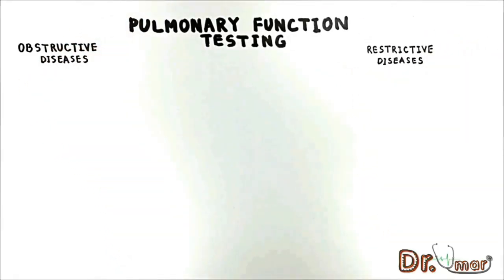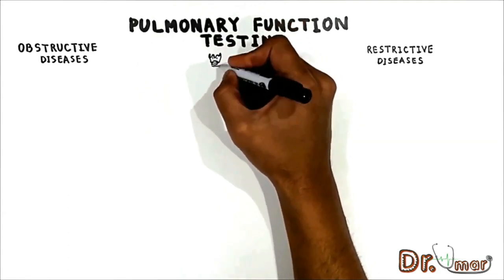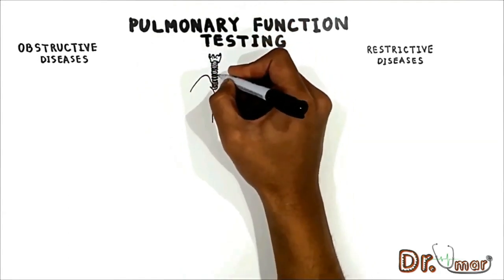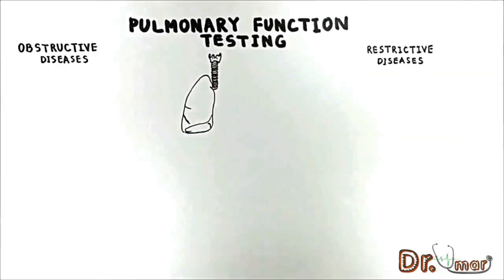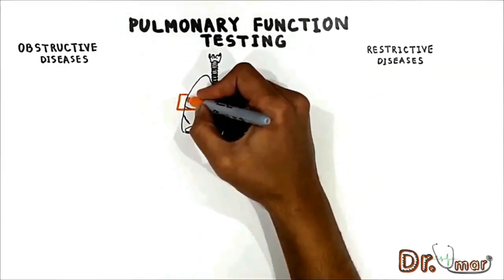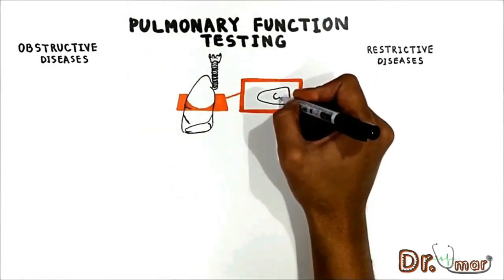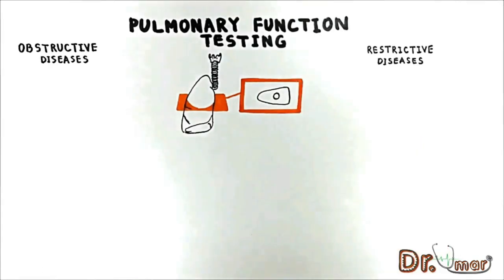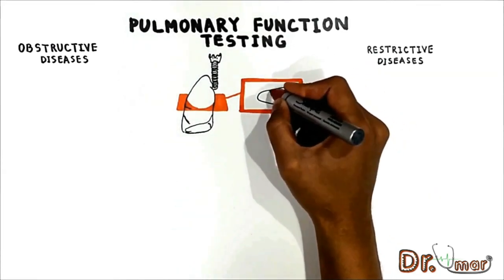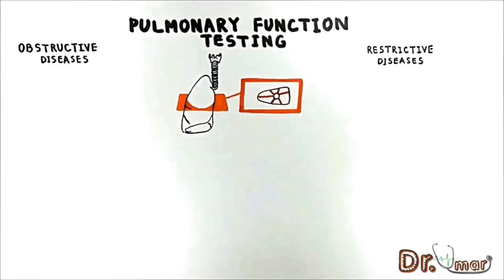In order to understand how flow and volume change in obstructive versus restrictive disease, let's first take a look at lung structure and normal flow and volume in a lung system. Here I will draw the cross-section of the lung with one airway. The airways are attached to the lung tissue, therefore during expiration they tend to keep them open and prevent them from collapsing. This is how the normal lung works.